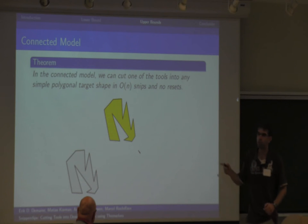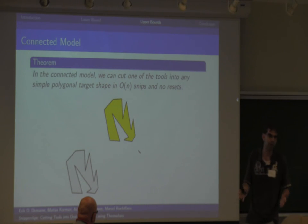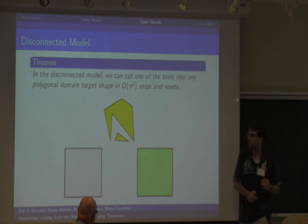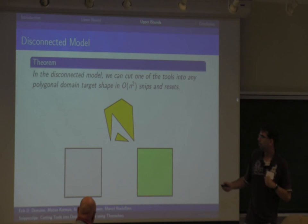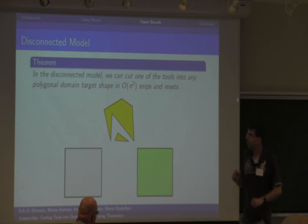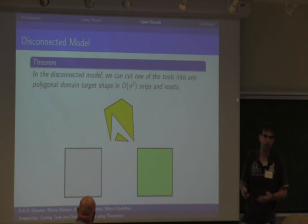Also note that this approach doesn't actually need any resets or undo operations. So this is really a very simple approach to solve the problem in the connected setting. The disconnected setting is quite a bit more tricky, also partially because we wanted to show that it works for polygonal domains instead of just simple polygons. Here, I'm going to show that we can always do it in a quadratic number of steps, so there will be a gap between the lower bound and upper bound.